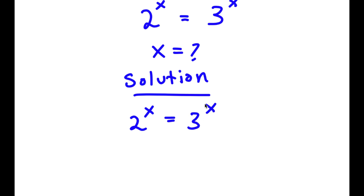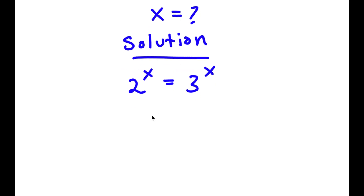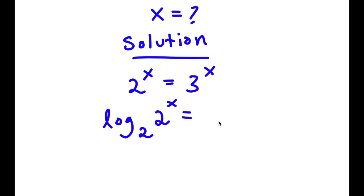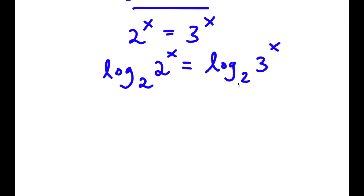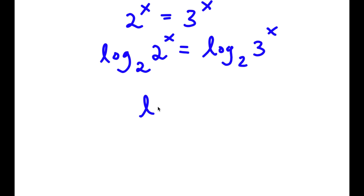And I'm going to take the log of base 2 on both sides. So now I have log base 2 of 2 to the power of x is equal to log base 2 of 3 to the power of x. Now, if I have something in the form log base a of a, this is simply equal to 1.